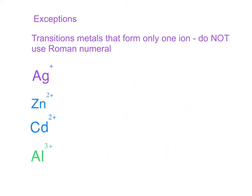Remember I told you there was about four of them that were exceptions. These are transition metals that only form one ion, so we do not use a Roman numeral. So instead of silver one ion, this is just silver ion.